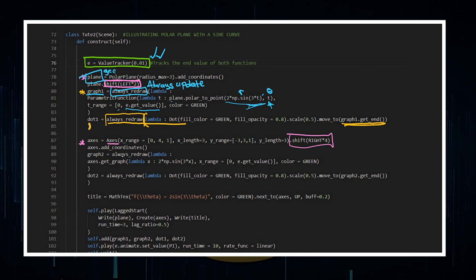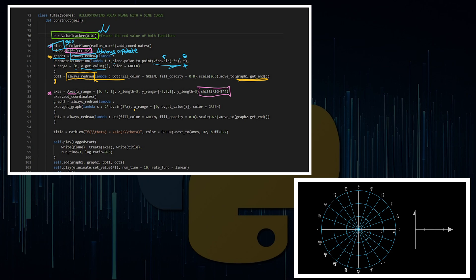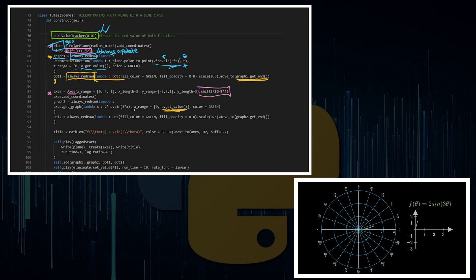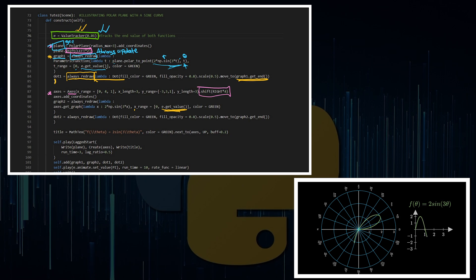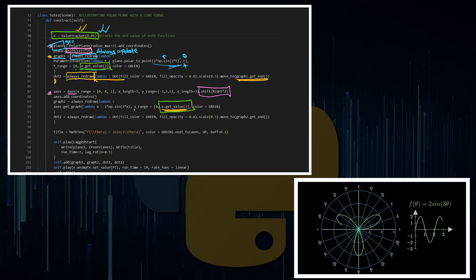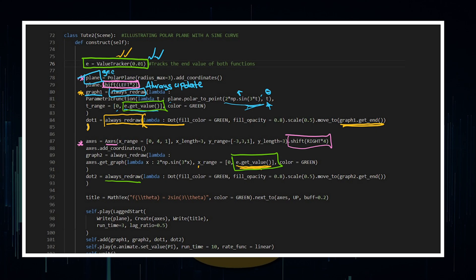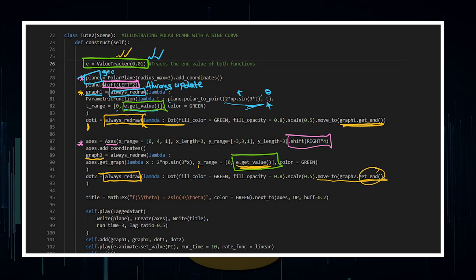Similar drill, right? Graph two, always_redraw because I want it to be constantly updating such that the x value here at the end, it's got an end value of e, which is given by the same value tracker. So the value tracker is going to be tracking the end of graph one here. And it's also going to be tracking the end of graph two there. Again, I've got the same effect with dot two, always_redraw. So always update me. And I want it to move it to graph two, get_end. So move it to this graph and get the end of the graph.